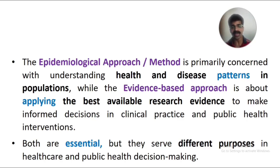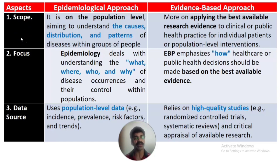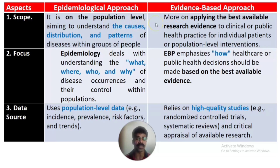Whenever you answer a differentiation question in the exam, make a table with three columns. The first column is for the aspects or features, and the second and third columns are for each of the two approaches being compared — in this case, the epidemiological approach and the evidence-based approach.